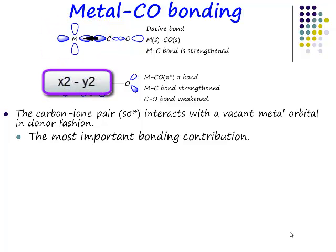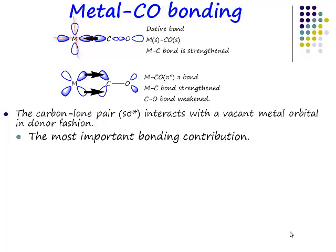It's the x²-y² orbital — this can only be one d-orbital — the x²-y² pointing along the X and Y axes, because those are the directions that an octahedron of ligands comes in on. So we must have our carbonyl ligand coming in along either the X or the Y axes, and we have a lone pair donated into an unoccupied orbital on the transition metal centre.